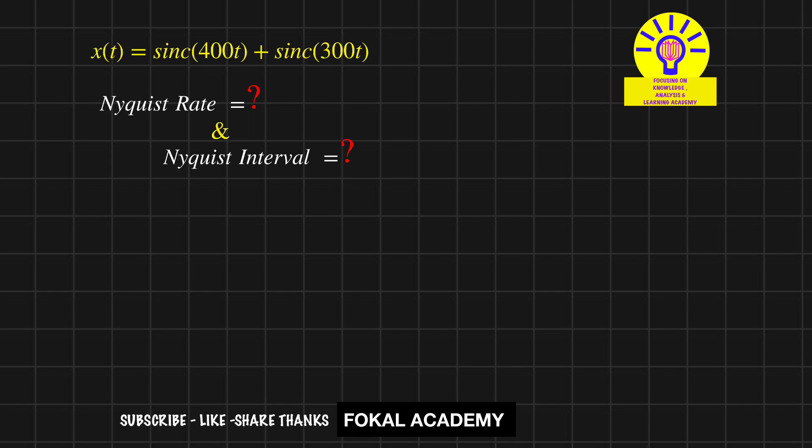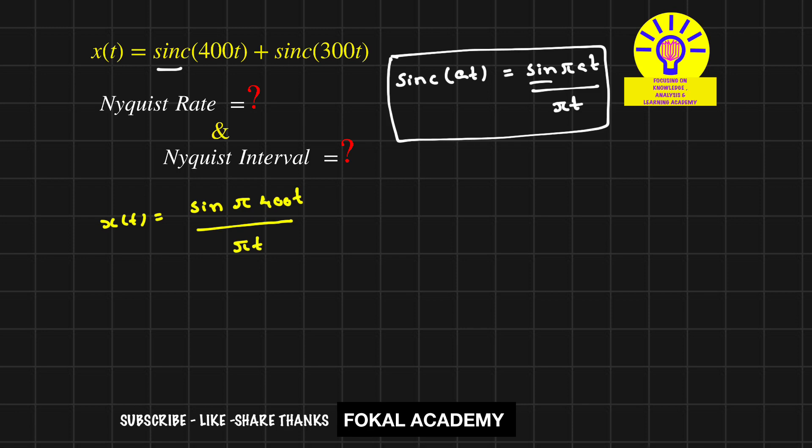First, convert sinc in terms of sin function. We know one relation: sinc(at) = sin(πat)/(πt). By applying this relation, we convert the sinc function into sin. So it becomes x(t) = sin(π·400t)/(πt) + sin(π·300t)/(πt).